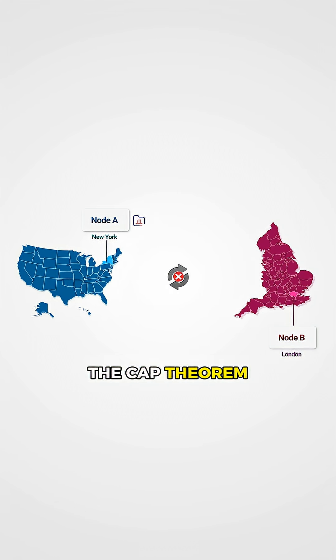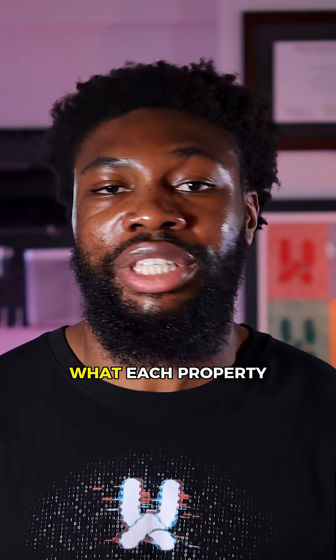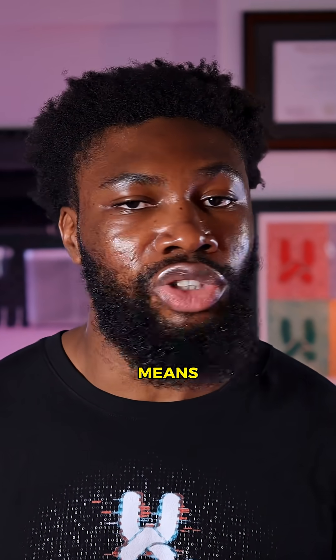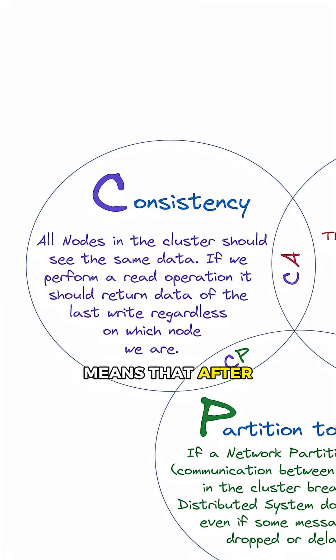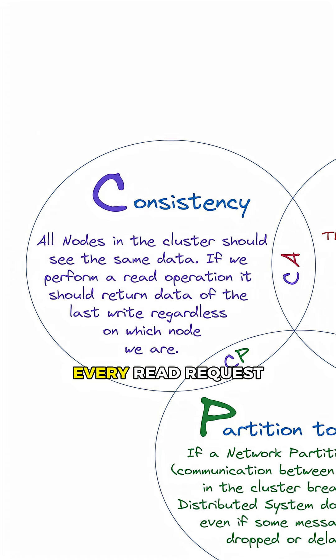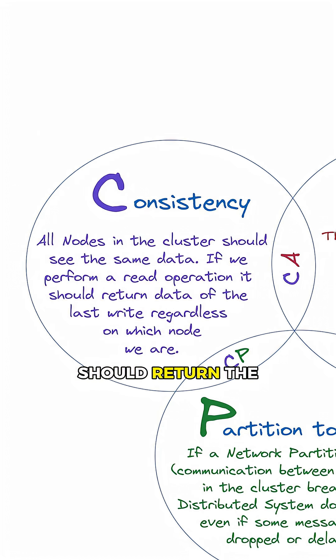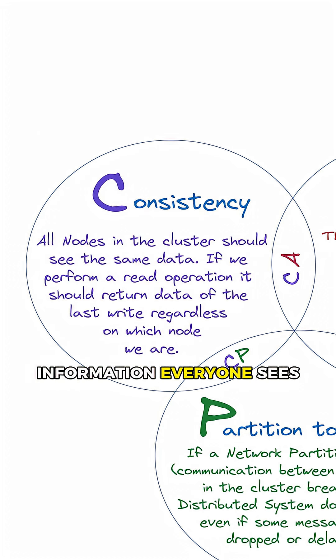This is where the CAP theorem kicks in. Let's define what each property means so we're on the same page. Consistency means that after you write data to the system, every read request from any node should return the same up-to-date information — everyone sees the same truth.